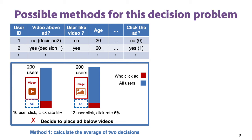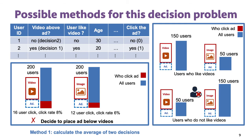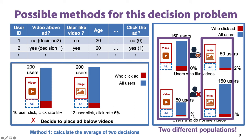Why does taking the average result in a wrong decision? This is because, in the log data, the users who see ads below videos and the users who see ads below images are different user populations. In fact, the users who see ads below videos are more likely to be the video lovers. So it is not fair to compare the average between two different populations of users.